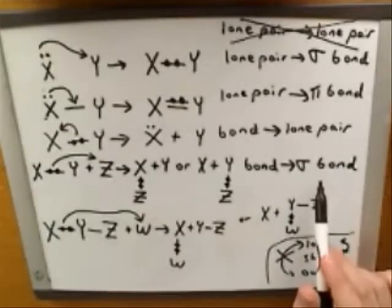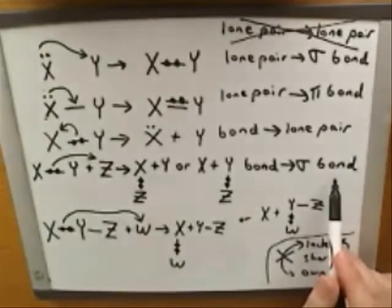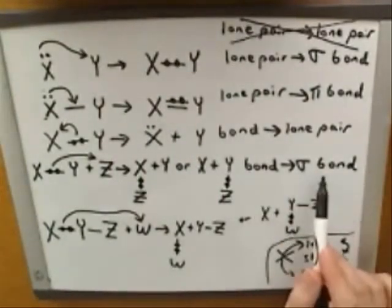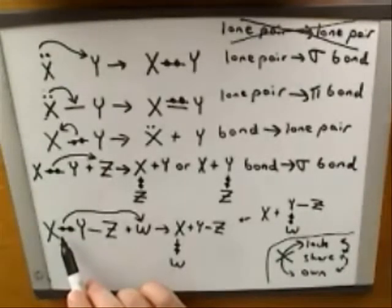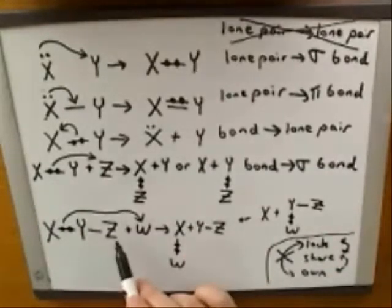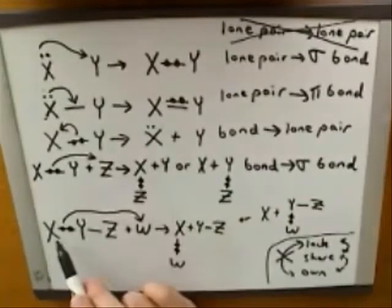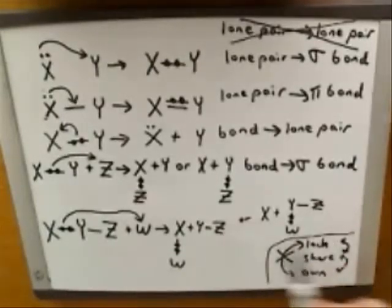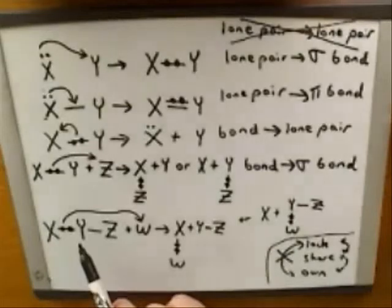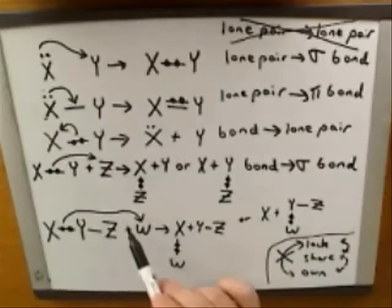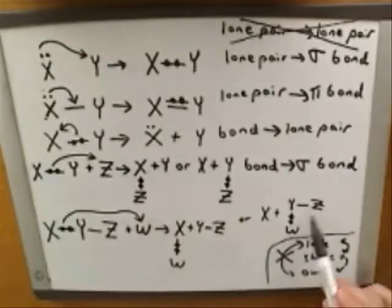To repeat those ideas: the new sigma bond is going to be formed with one of the atoms that was sharing the original bond that's getting broken. In this case, the original bond we're breaking is between X and Y, so the new bond will be formed either with X or Y. The bond that we're breaking did not involve Z, so Z is not going to be forming the new sigma bond. The other atom that forms the new sigma bond is the one at the head of the arrow — here, W.